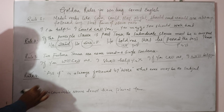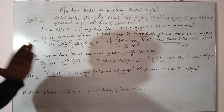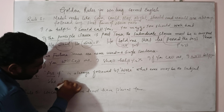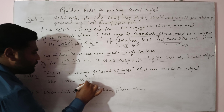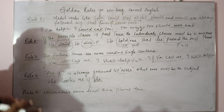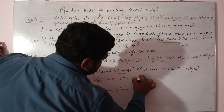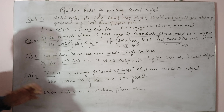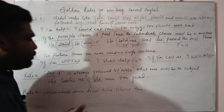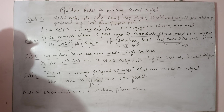Rule number four: 'as if' is always followed by 'were', whatever the subject may be. Jab bhi hum 'as if' istemal karte hain to us ke baad 'were' istemal karenge — chahe subject singular ho ya plural ho. For example: 'She looks as if she were your friend.' She singular hai lekin hum ne 'were' istemal kiya. So 'as if' is always followed by 'were'.